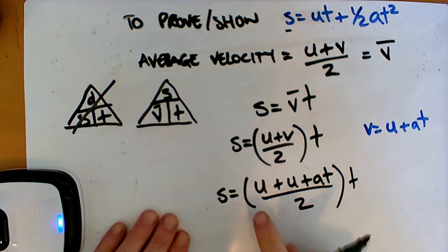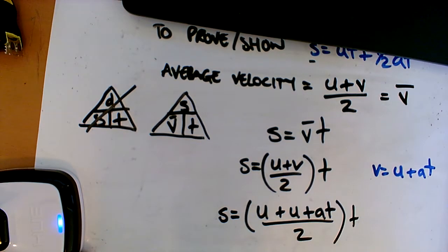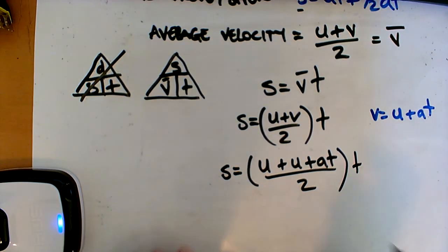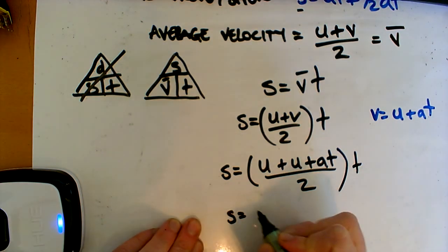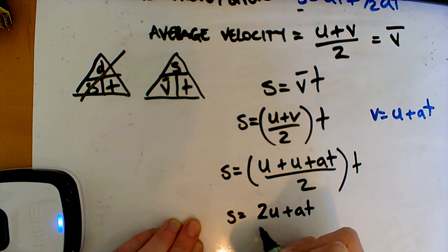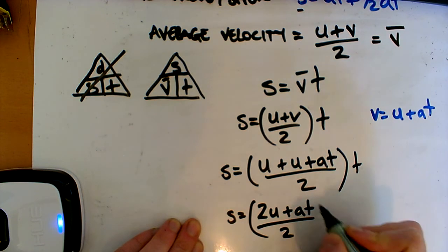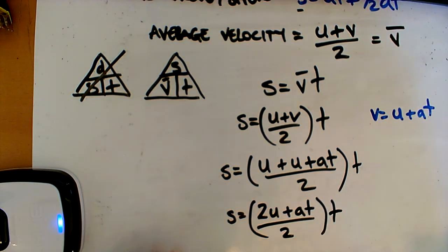So let's see what we can do. Let's tidy this up a little bit. Okay, so we've got two U's here. We can add them together, can't we? So we'll just do S is equal to 2U plus AT all over 2. And there's another T.